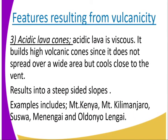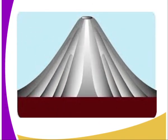Number three, we have the acidic lava cones. Acidic lava is viscous and builds up volcanic cones since it does not spread over a wide area but accumulates across the vent, resulting in a steep-sided dome. Examples are Mount Kenya, Mount Kilimanjaro, Mount Suswa, Menengai, and Oldoinyo Lengai. Let us see the image — that is what acidic lava cones look like.